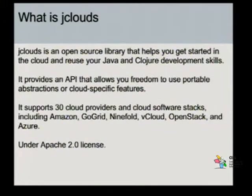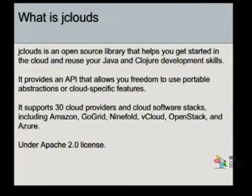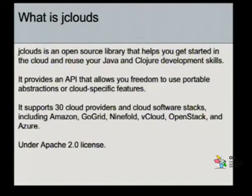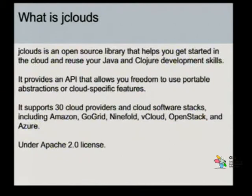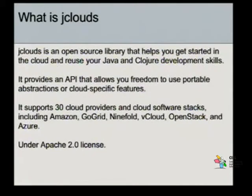Essa API disponibilizada pelo jClouds permite o uso tanto de abstrações genéricas para vários tipos de provedor, como APIs específicas, por exemplo, para uso de Google App Engine ou Amazon S3, entre outros. Além das abstrações genéricas que você pode usar tanto para um provedor como outro, você tem essas APIs específicas para provedores de nuvem. E ele suporta mais de 30 provedores de nuvem e pilhas de software para nuvem.